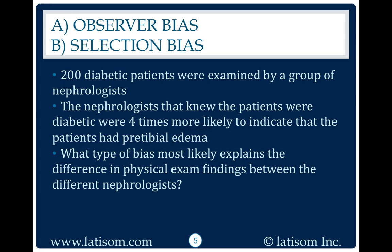200 diabetic patients were examined by a group of nephrologists. The nephrologists that knew the patients were diabetic were four times more likely to indicate that the patients had pretibial edema. What type of bias most likely explains the difference in physical exam findings between the different nephrologists?